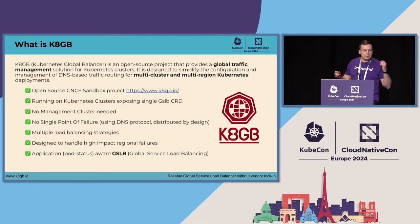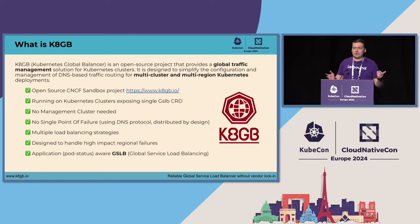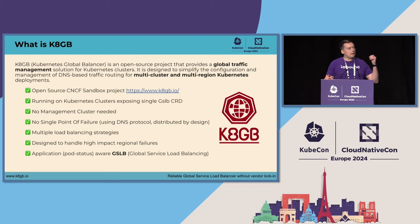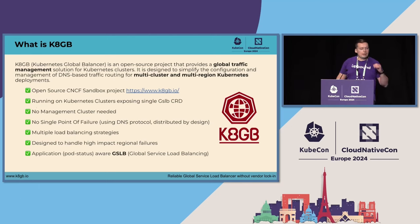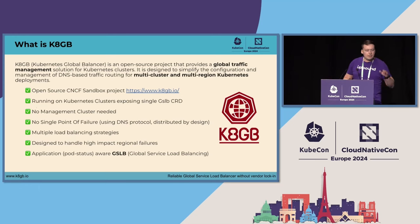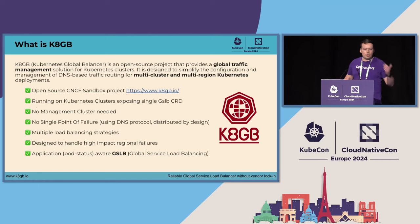The main differentiators of the KGB project is that it's Kubernetes native. It exposes a GSLB CRD to control quite challenging global traffic management configuration. There is no single point of failure because there is no need for a management cluster, so you deploy KGB next to your workloads. We use DNS protocol that is battle tested. It's running the internet and the whole setup is distributed by design. We support multiple load balancing strategies like failover, round-robin, and geo-proximity.